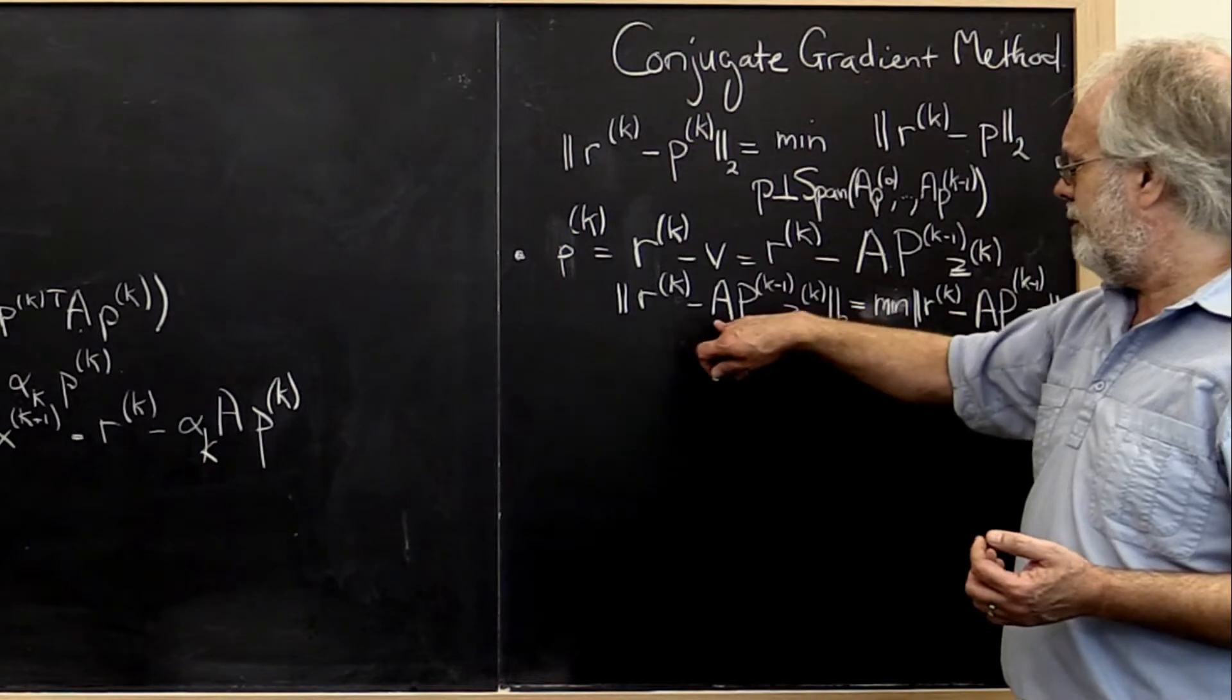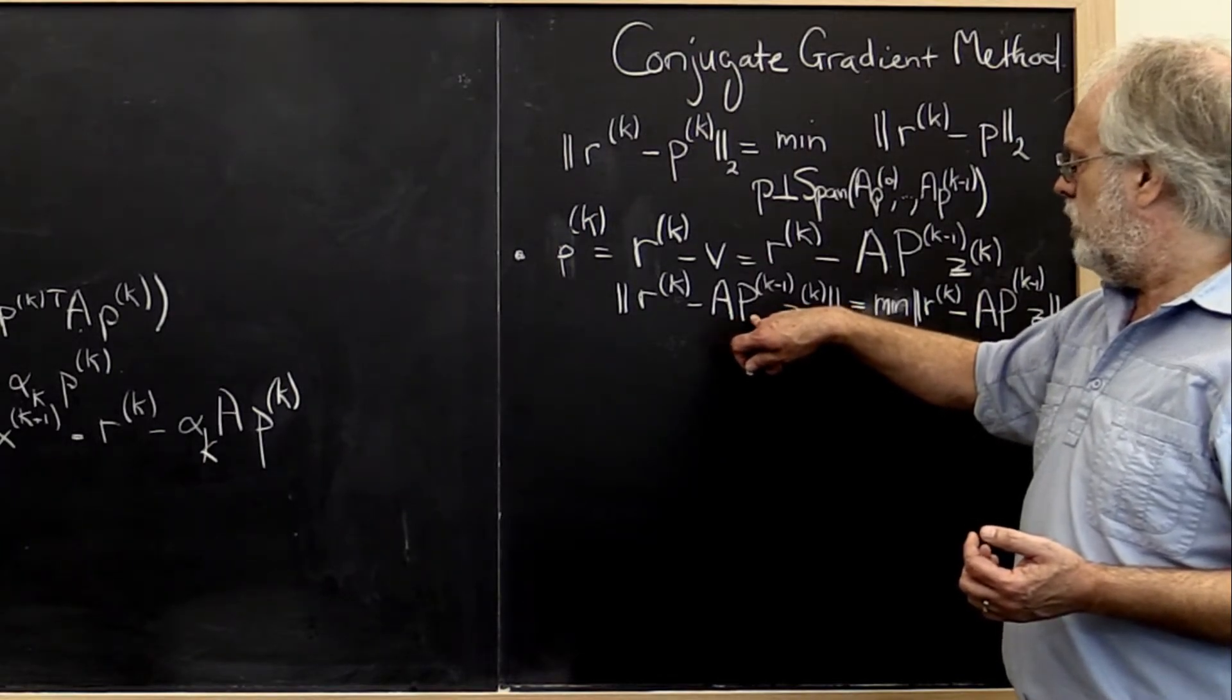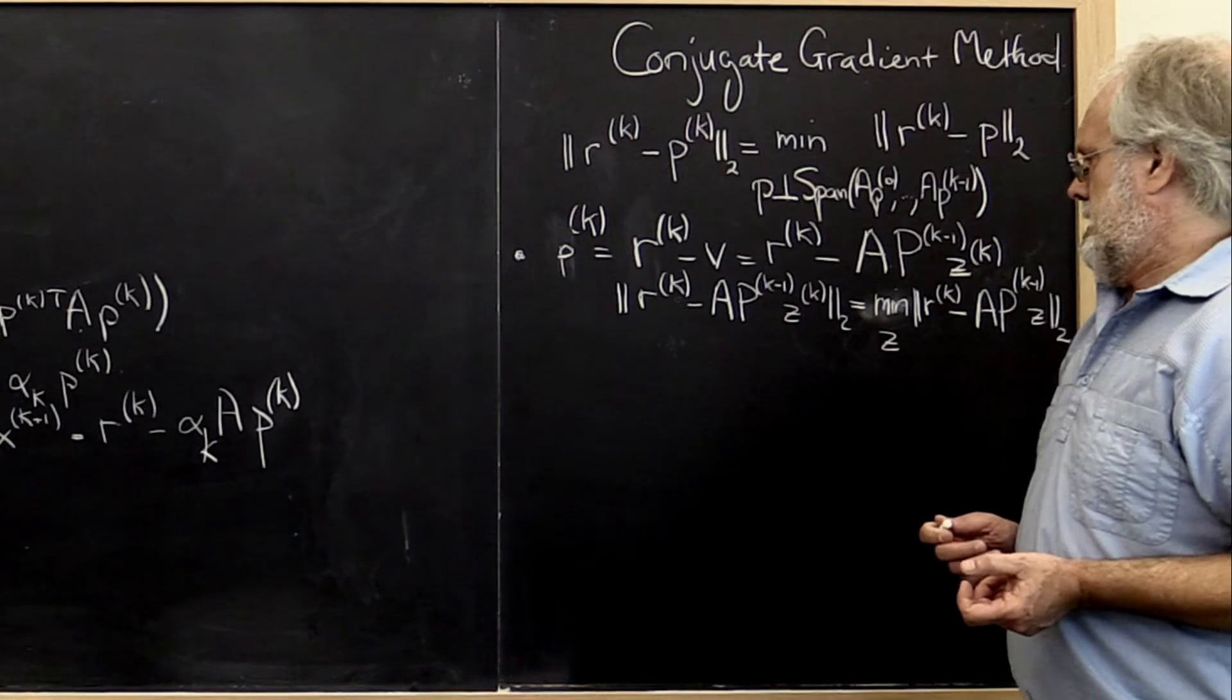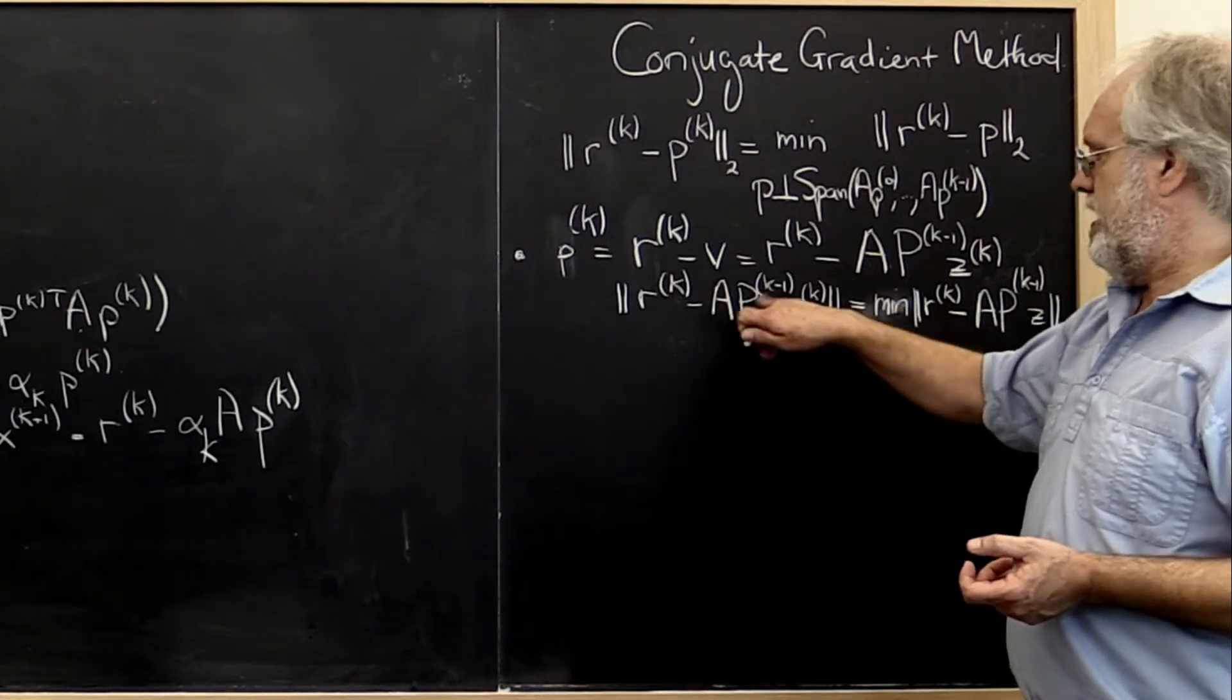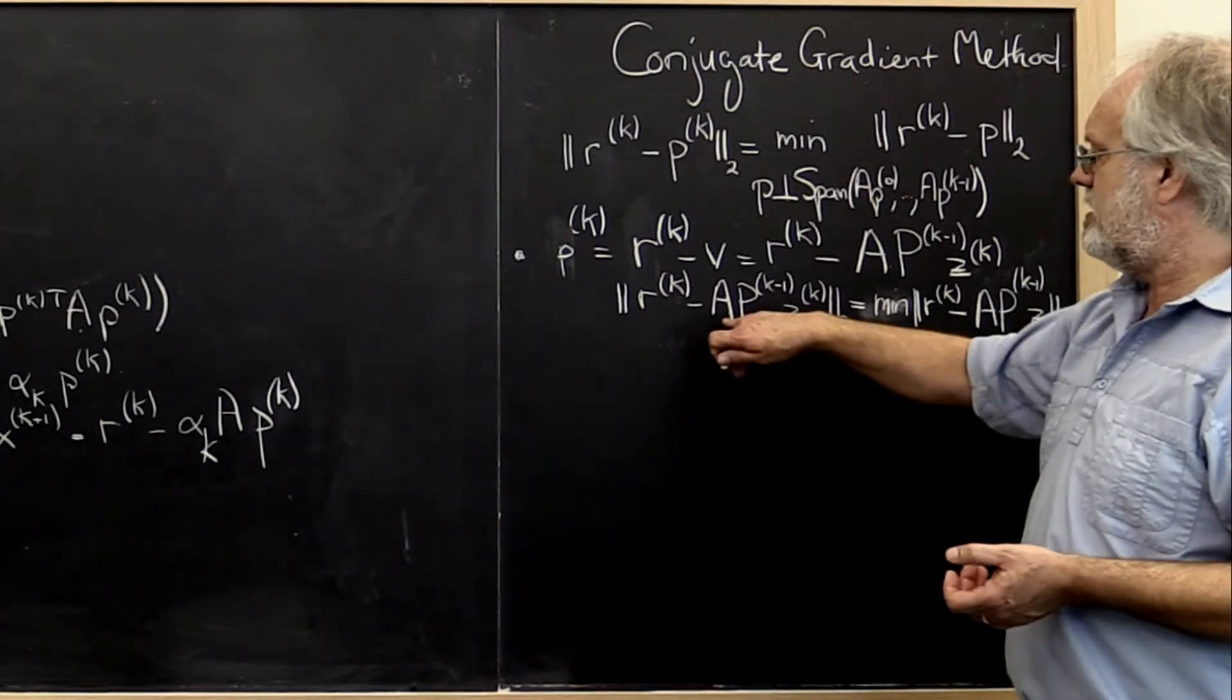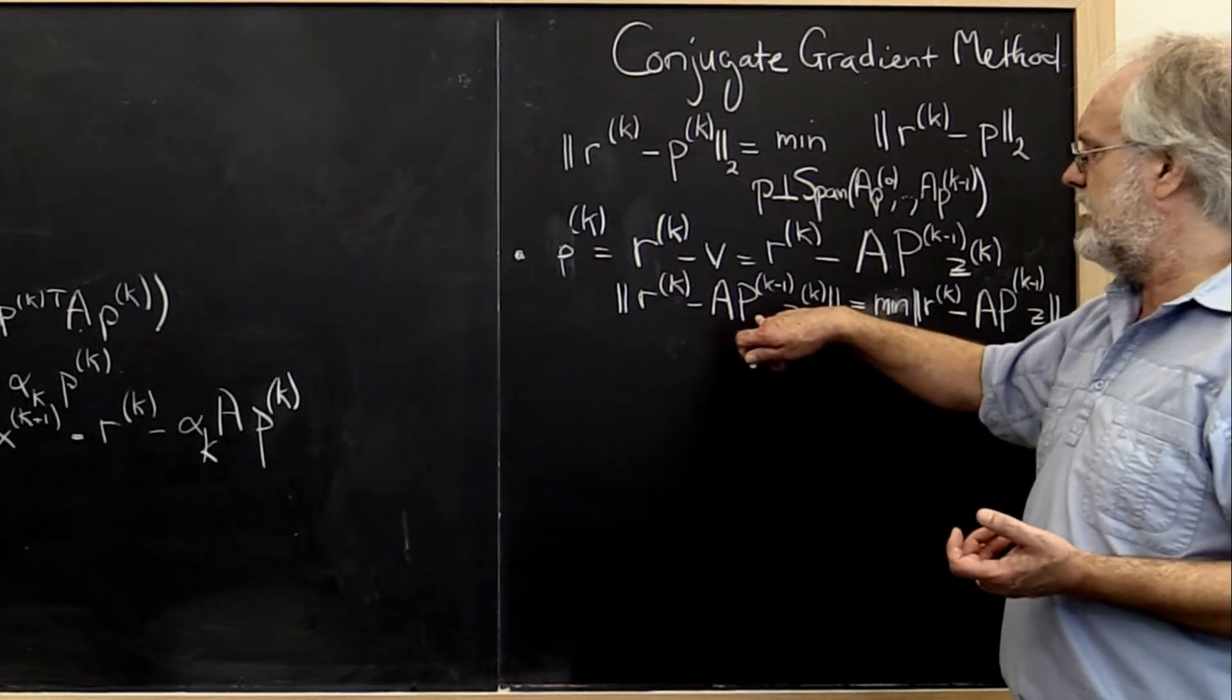In the first iteration you will have had no previous search directions. So this ends up being an n by 0 matrix. In the second iteration it ends up being an n by 1 matrix and so forth.